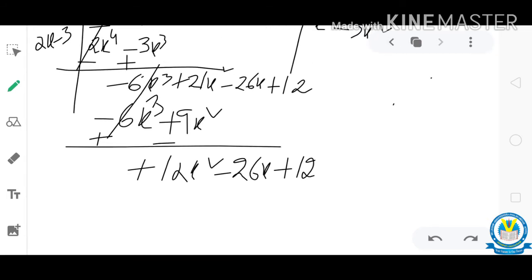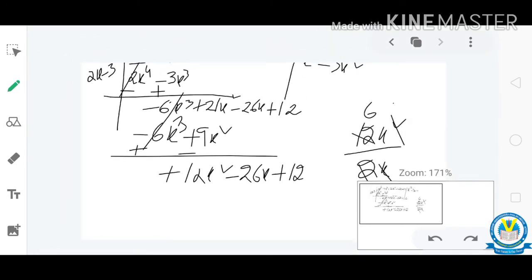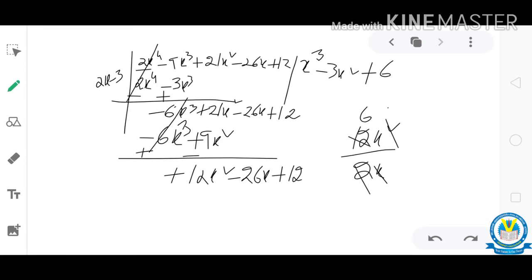Minus. So first variable, first variable 12x square, divide with first variable of divisor. So here 2x, 1x is cancelled, remaining 1x. 2 is cancelled, 6 things. So the answer is 6x. So I can place here 6x. 6x into 2x. 6 into 2, 12. X into x, x square. So 12x square.